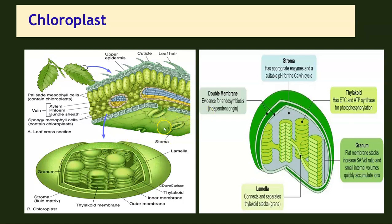The CO2 reaches the chloroplasts through the stomata, and water reaches them through the veins. The stomata are small openings present in the epidermis of the leaf from where the exchange of gases takes place — that is, CO2 can enter in.